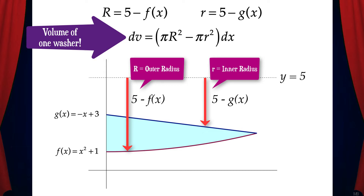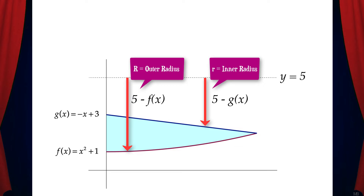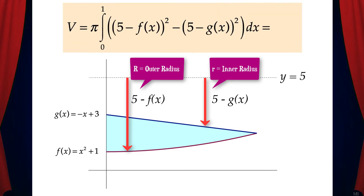That would be pi times big R squared minus pi times little r squared, times dx — the infinitely small width of the washer. And to find the volume of revolution, we just add up all of the dv's from 0 to 1, represented with a definite integral.